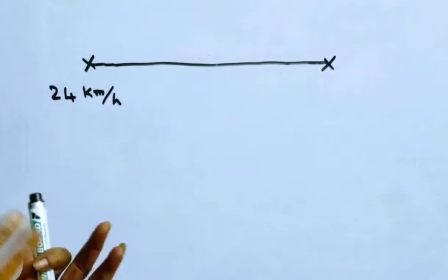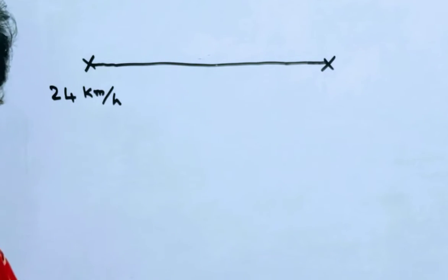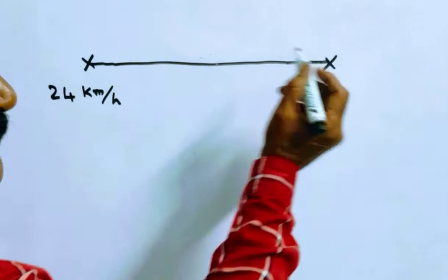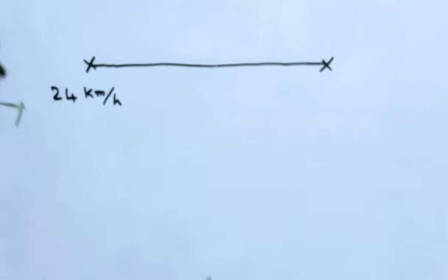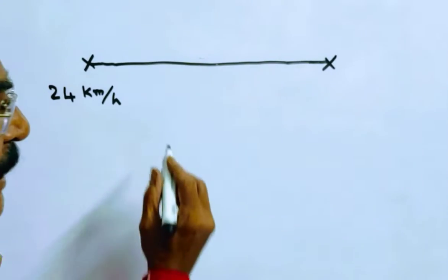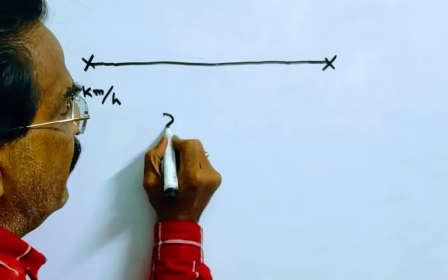In this 15 minutes of time, the first cycle must have travelled a distance of velocity into time.